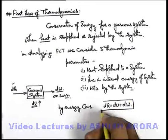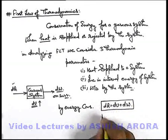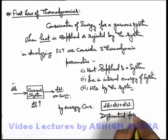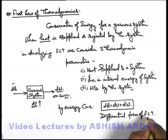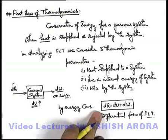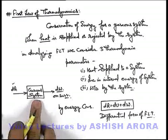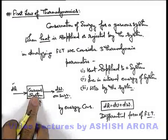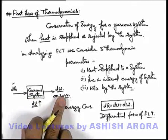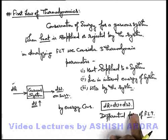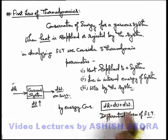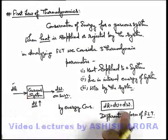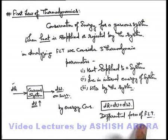By energy conservation, dQ is the amount of heat supplied, out of which dU is extracted by the system to raise its own temperature, and dW is the work done on the surrounding during expansion. So we can simply state: dQ = dU + dW. This is called the differential form of the first law of thermodynamics.